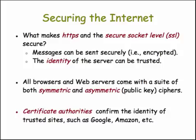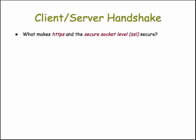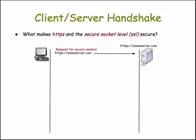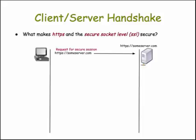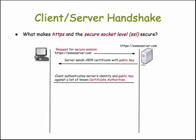We're going to see how all this works together. Let's begin with the handshake that takes place whenever your browser requests a secure session with a server. Your browser on the left is running on your laptop or desktop computer. It makes a secure request to some server using the HTTPS protocol. The first thing the server does is respond to the client by sending an X.509 certificate — that's a standard certificate containing its public key. The client takes this certificate and uses one of its built-in digital certificates to authenticate that the server really is who it says it is — that the server is Amazon.